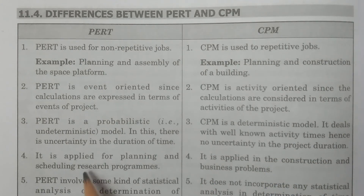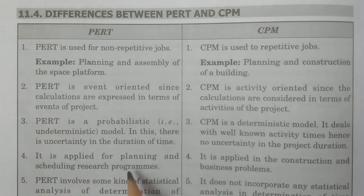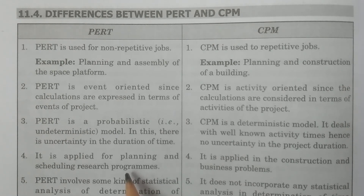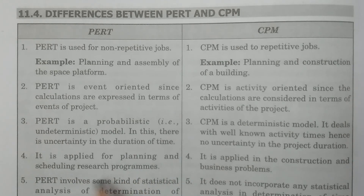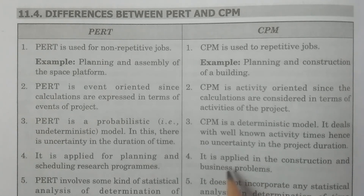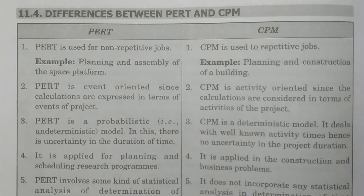The fourth point: PERT is applied for planning and scheduling research programs. This is one of the very important example applications of PERT. Whereas CPM is applied in construction and business problems. This is a major difference between PERT and CPM.